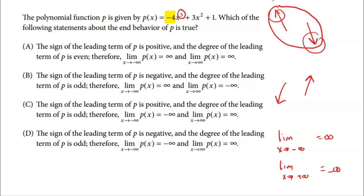So before even looking at any choices, we know the left-hand side goes toward positive infinity and the right-hand side goes toward negative infinity. Choice A has both sides going toward positive infinity — that would be true for an even degree with a positive leading coefficient, so that's wrong. Choice B says as x approaches negative infinity the function goes up, and as x approaches positive infinity it goes down — that's exactly what we're looking for, so B is correct. Choice C had the left side going down and the right side going up, which would require a positive leading coefficient with an odd degree. D is also incorrect for similar reasons.